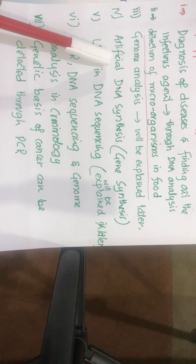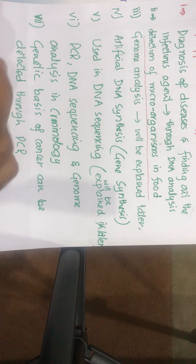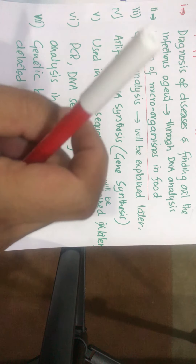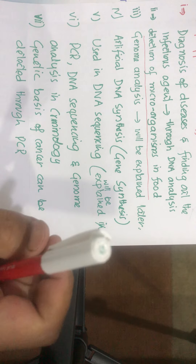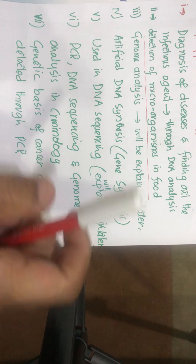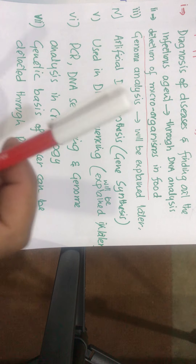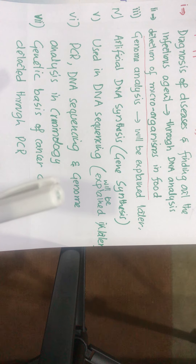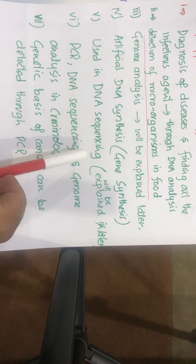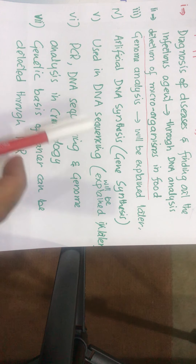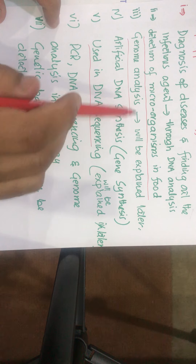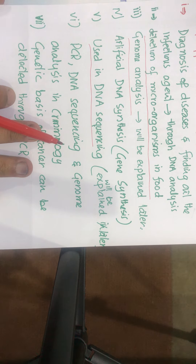In artificial DNA synthesis, we synthesize DNA using specific primers, and the technique used for this is PCR. With specific nucleotides and specific primers, PCR synthesizes a particular gene or a specific piece of DNA. Similarly, PCR is used in DNA sequencing — the DNA sequencing method is based on PCR. These two applications will be explained in detail in the upcoming lectures.